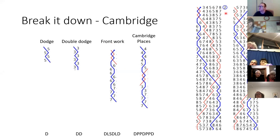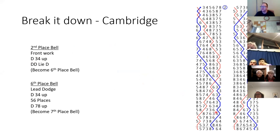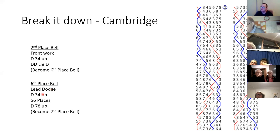In Cambridge there are double dodges in the middle, double dodges at the back in seven-eight place, the front piece of work where you dodge, lead, make seconds, dodge, lead, dodge, and the Cambridge places where you dodge, make a place, make a place, dodge, make a place, make a place, dodge again. So by breaking the method down and grouping pieces of work together we can simplify learning. The second place bell, which starts with that long line, can be broken down into just four lines of text: front work, dodge three-four up, double dodge, lie and dodge — and similarly for sixth place bell.